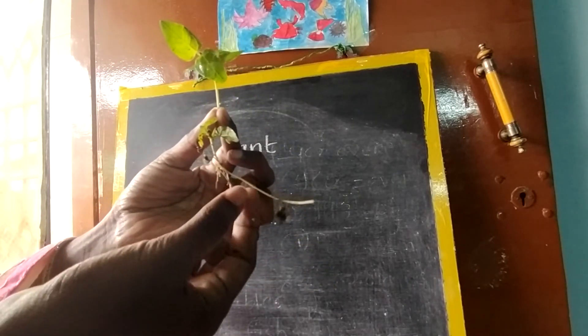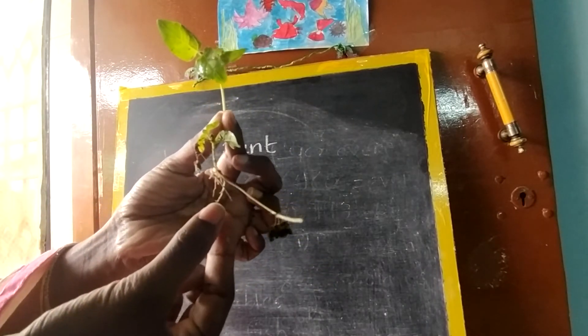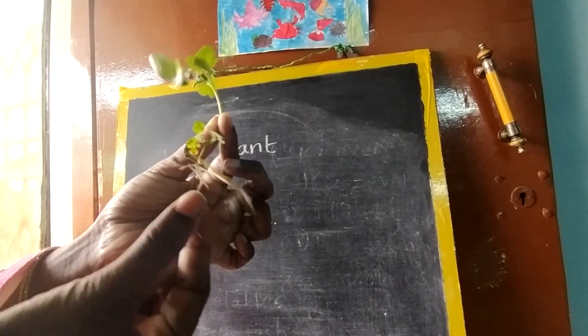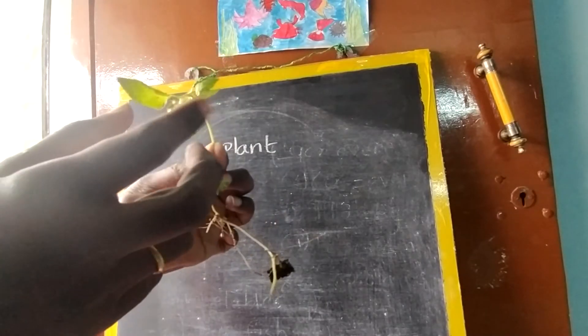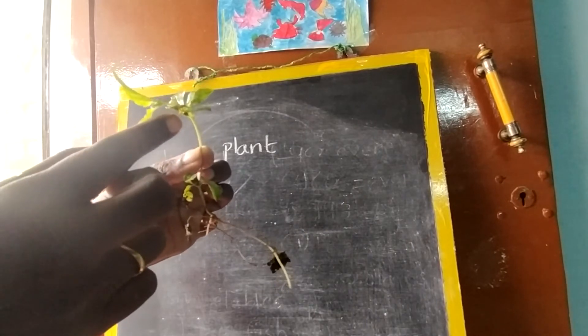Can you see the down one, the brown color and muddy one? This is called as root. Even can you see here, some yellow color? What is this? It is called as flower.